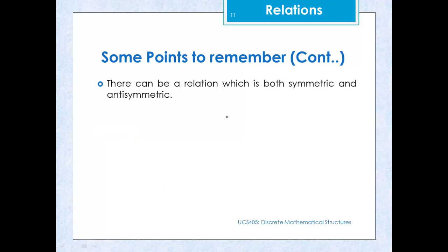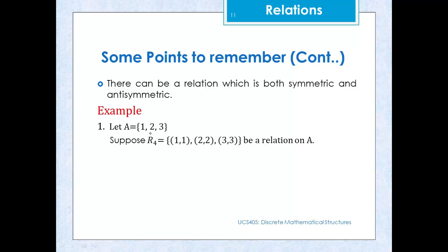Another point: there can be a relation which is both symmetric and antisymmetric. For example, relation R4 = {(1,1), (2,2), (3,3)}, which is the equality relation, is both symmetric and antisymmetric, because in antisymmetric relations self-loops are allowed.